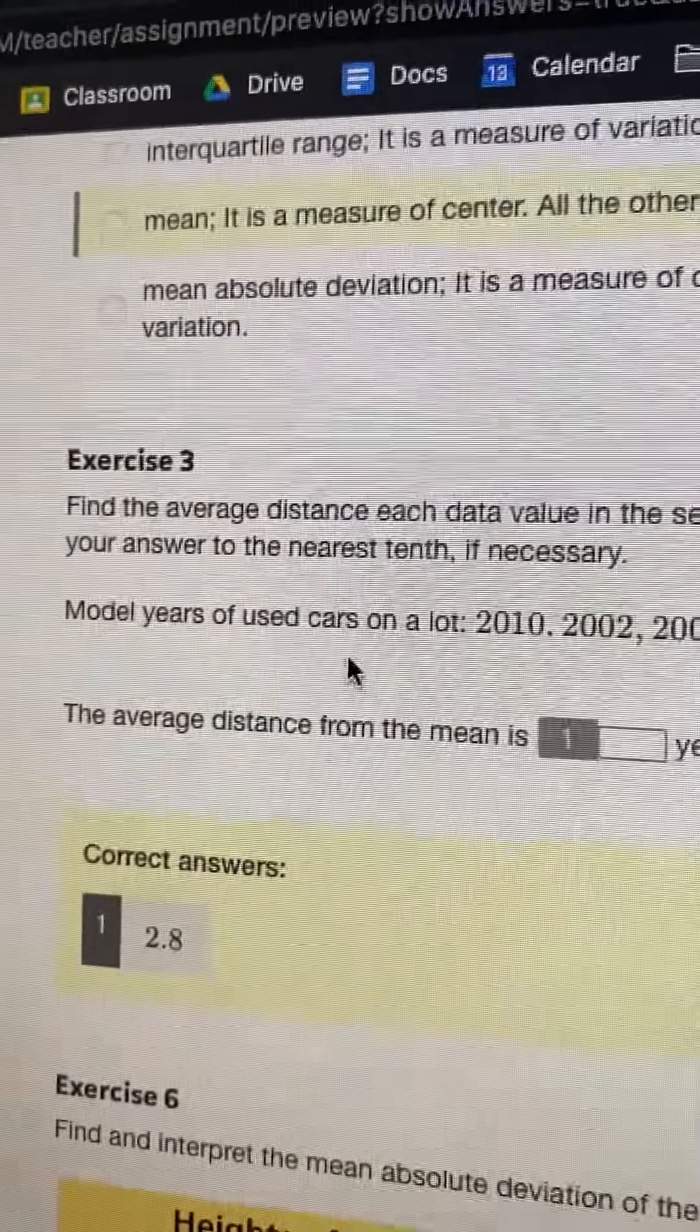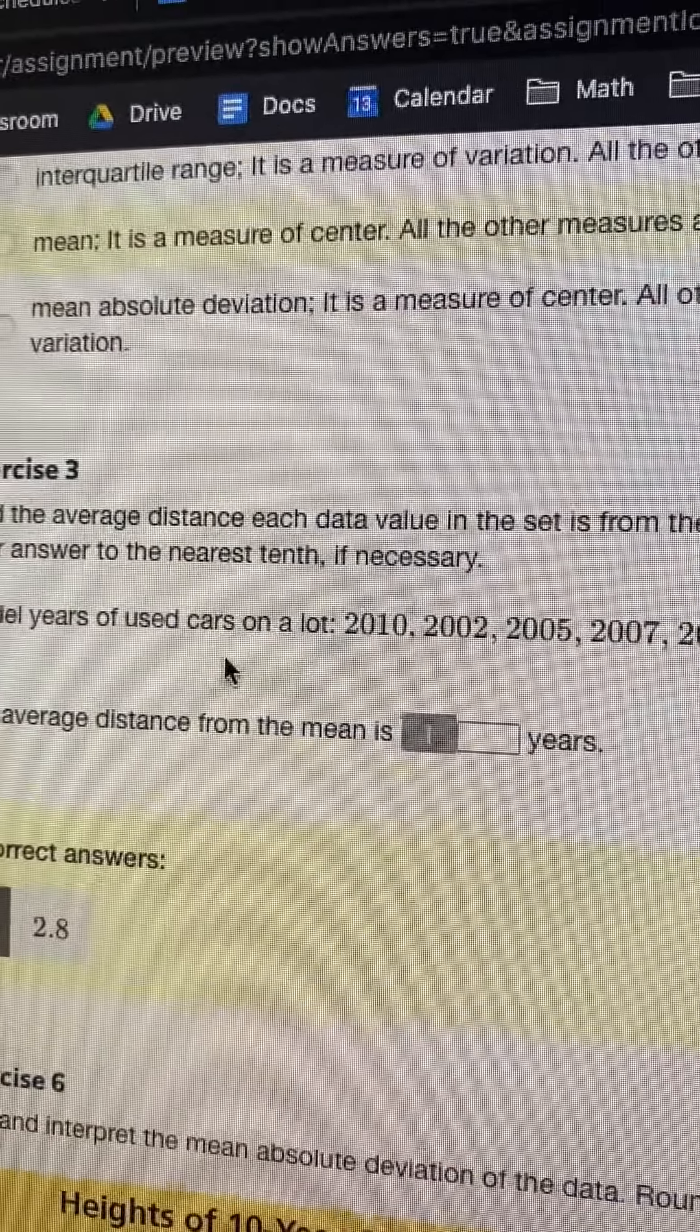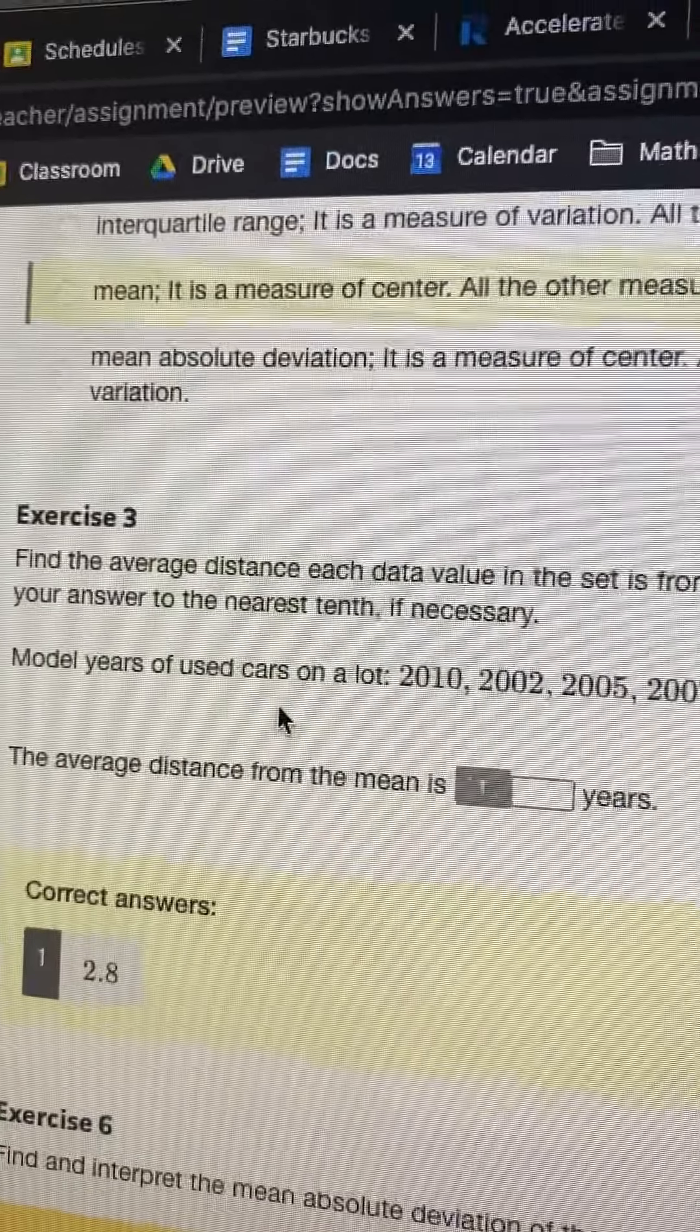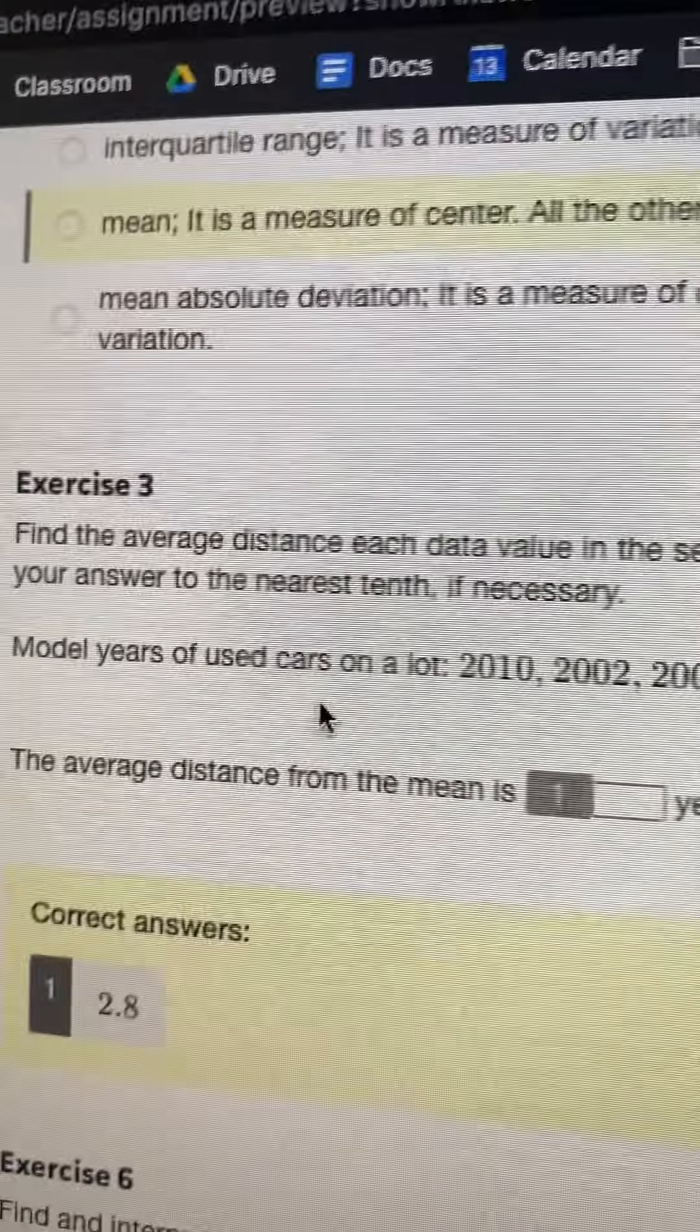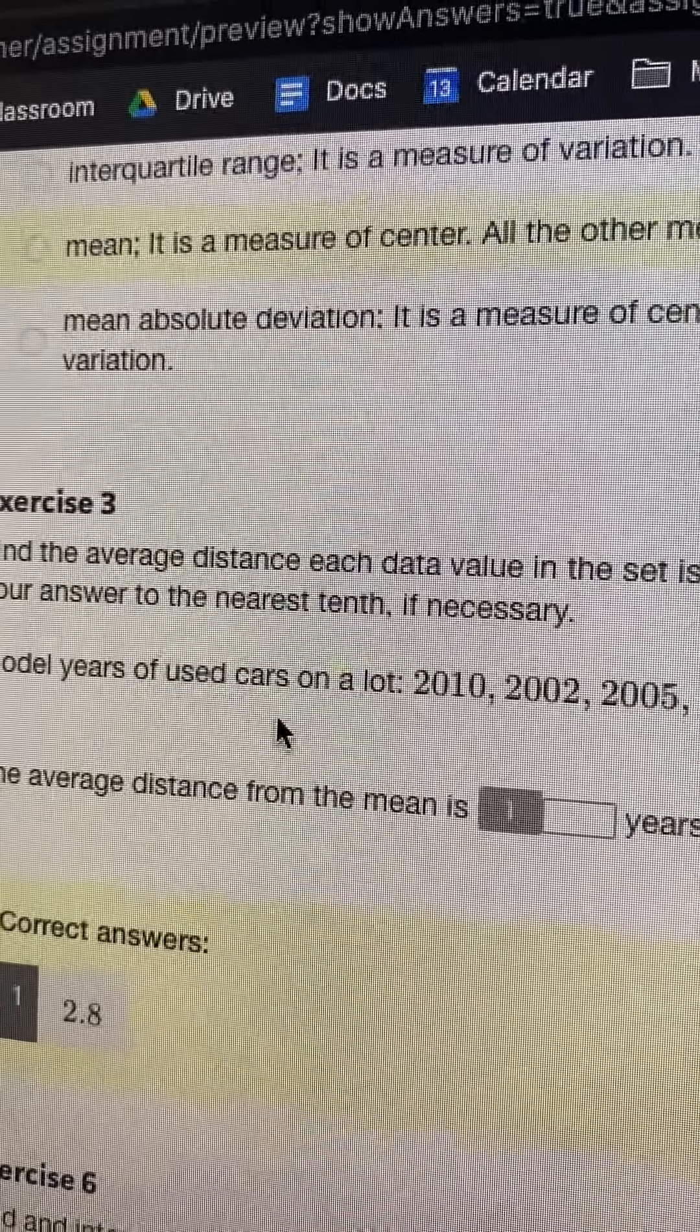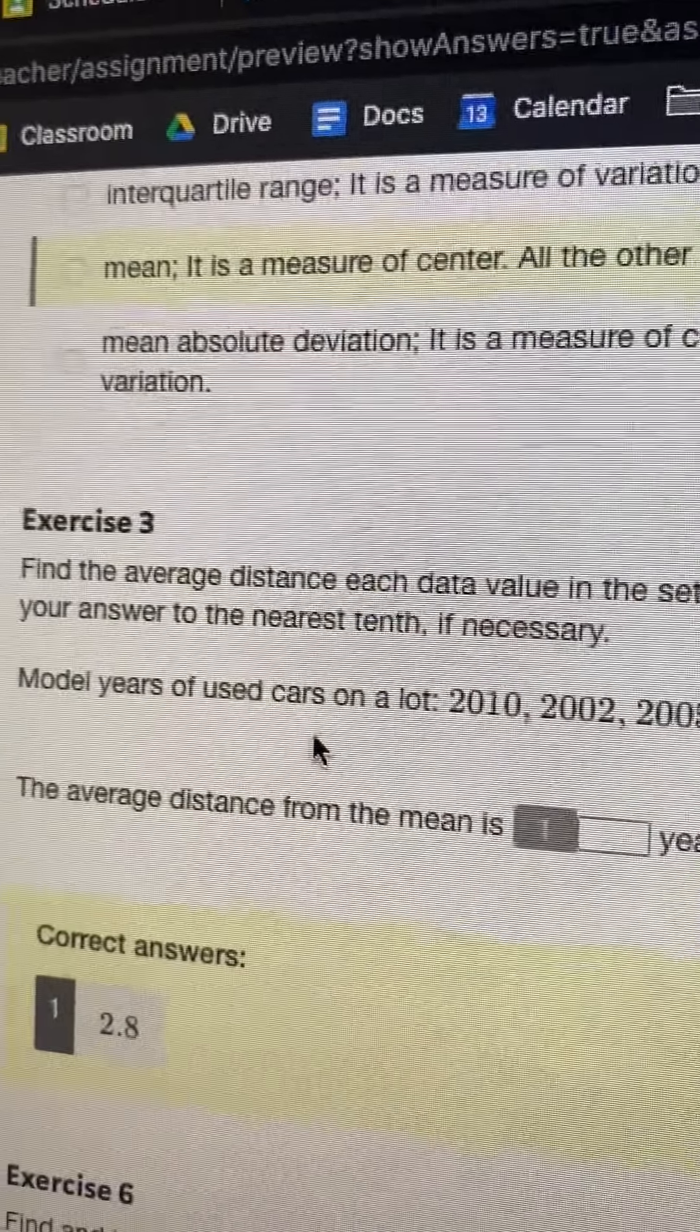Okay, Ivy. It says find the average distance each data value in the set is from the mean. Round your answer to the nearest tenth, if necessary.